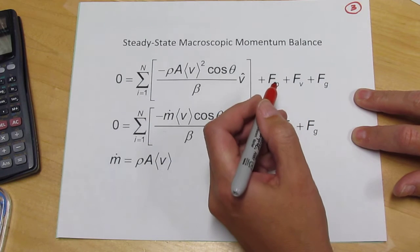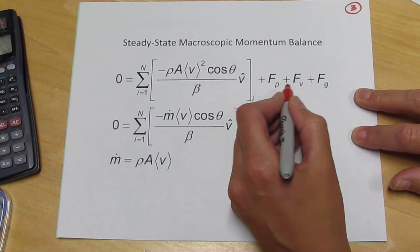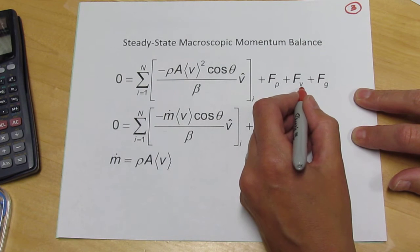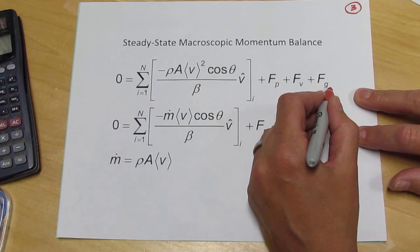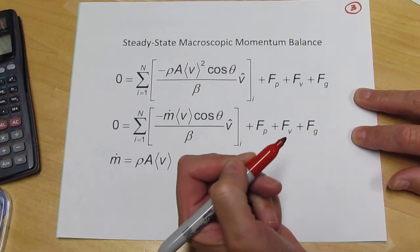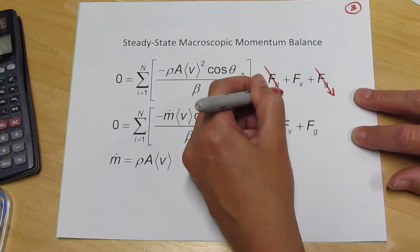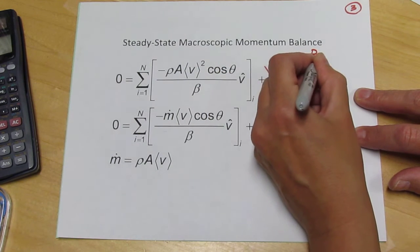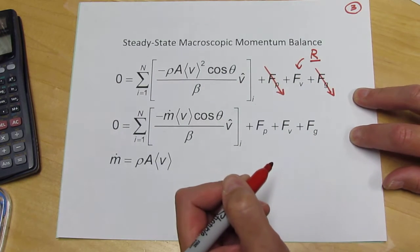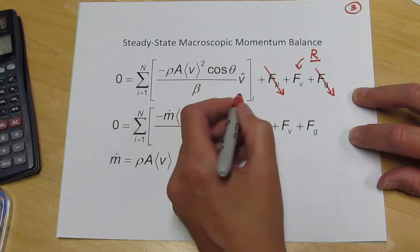Now the forces in this kind of problem are the pressure forces, the forces on the solid walls including the viscous forces, and gravity. So in the current problem we are neglecting gravity and pressure is constant throughout. So all we have is the vector force on the walls, which we'll follow Giancobolis and call R, and the convective terms.